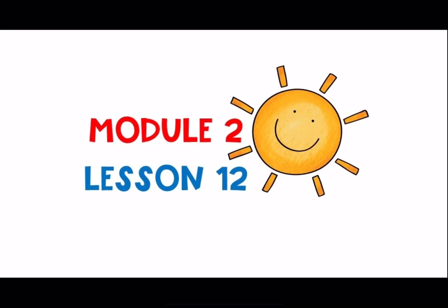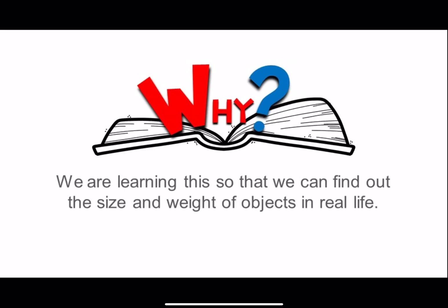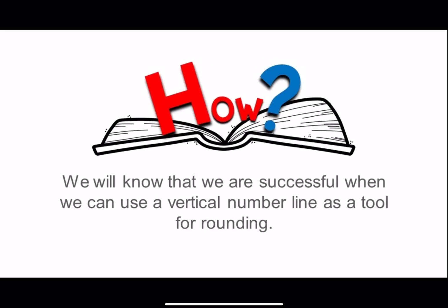Welcome to Module 2, Lesson 12. Let's get started. Today we will be learning how to round two-digit measurements to the nearest ten on the vertical number line. We are learning this so that we can find out the size and weight of objects in real life. We will know that we are successful when we can use a vertical number line as a tool for rounding.